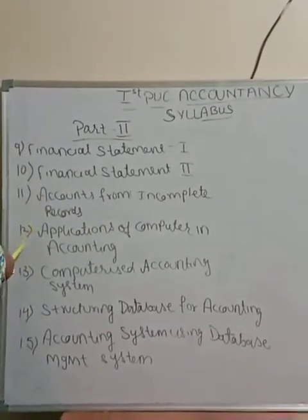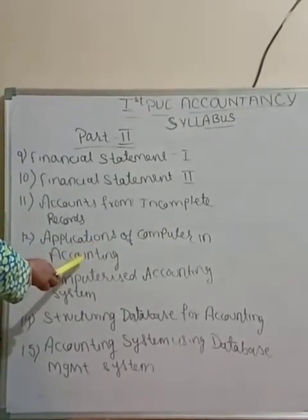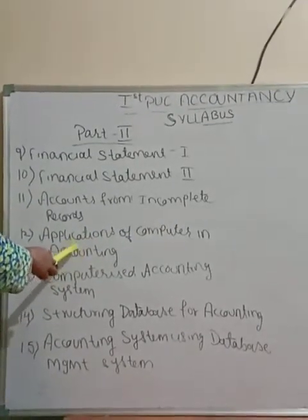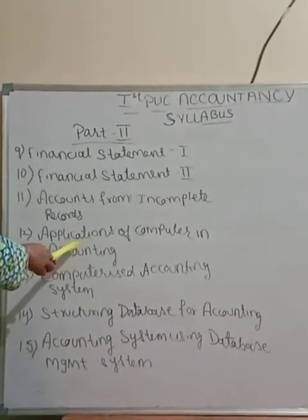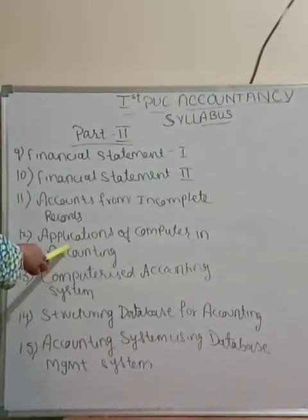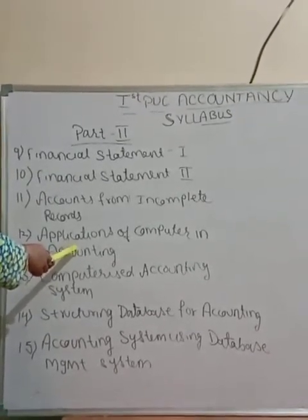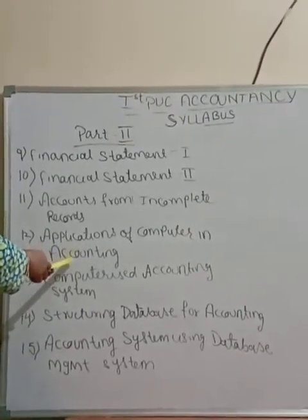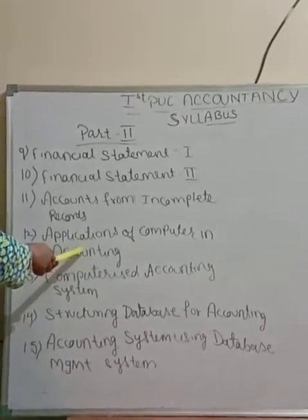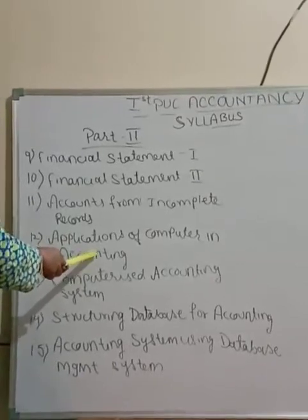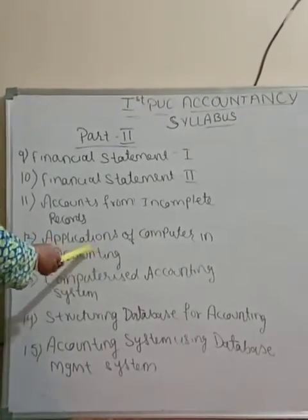Chapter 12 is Applications of Computers in Accounting. Under this chapter we are going to learn the meaning of a computer system, advantages of the computer system, limitations of the computer system, and components — that is, parts and elements — of the computer system.